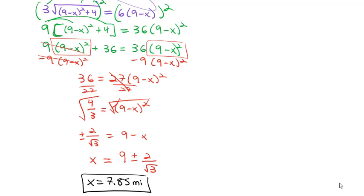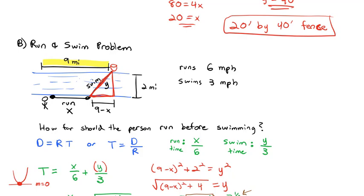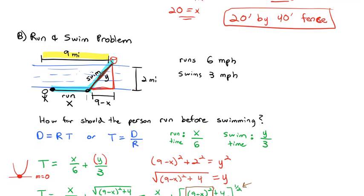This person is a great runner — they should run 7.85 miles before jumping into the water and swimming the rest of the way diagonally to the pot of gold. Running 7.85 miles, then swimming diagonally, will be the quickest way to get there. That's the run and swim problem.